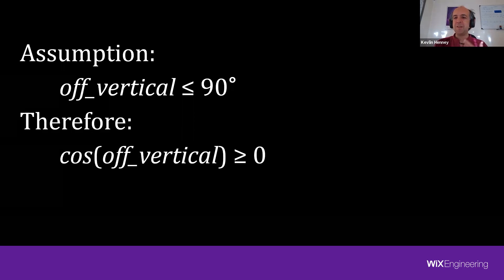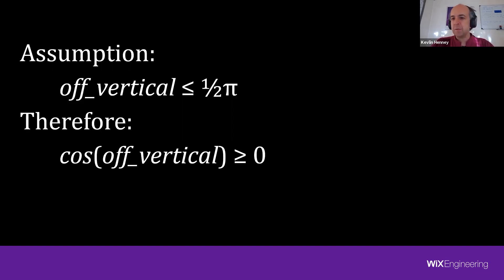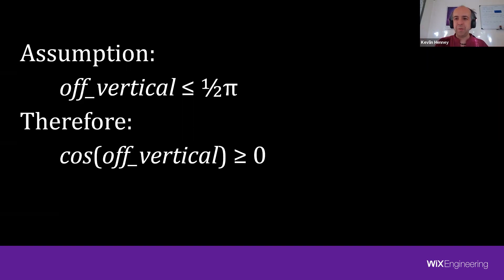We can formalize this as a precondition and postcondition: if the off-vertical angle is less than 90 degrees, then the result must be greater than or equal to zero. This three-part rule was established in the 1960s — we've recently reinvented it in the 21st century as Given/When/Then. But that's a great way of testing it, because it also prompts the question: what about the other case? Because assumptions are invisible, we just write the happy path and terrible things happen.